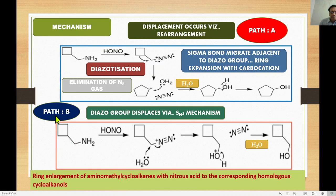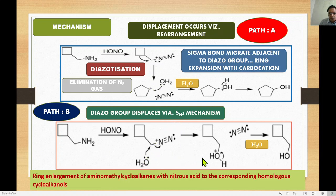In Path B, the diazonium group is displaced via an SN2 mechanism. Instead of sigma bond migration for ring expansion, a water molecule attacks in SN2 fashion, leading to elimination of nitrogen gas and formation of the OH group — so NH₂ is simply replaced by OH.